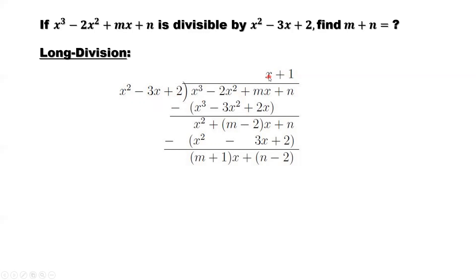Put the x here because the constant here is 1. So we don't have anything in front of x. x times x squared is x cubed. x times negative 3x is negative 3x squared. Positive 2 times x, that's 2x. Subtract. x to the power 3, x to the power 3, cancel each other. Negative 2x squared minus minus 3x squared. Here should be plus 3x squared minus 2x squared is 1x squared. m minus 2x. n drop down to here.